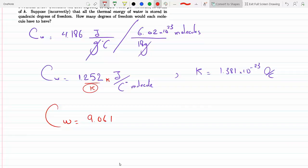K again is Boltzmann's constant. So that means to raise the temperature of water by one degree Celsius, we need to increase the energy of every molecule—that's what the heat capacity is—by 9.06K.